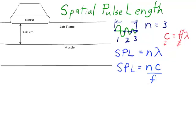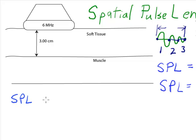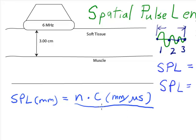Now it turns out that usually for the spatial pulse length, if we want to get our answer in millimeters, we want to use the velocity of sound with units of millimeters per microsecond, and for the frequency, we want to use megahertz.